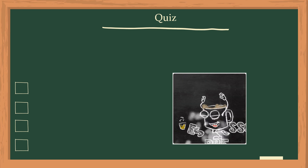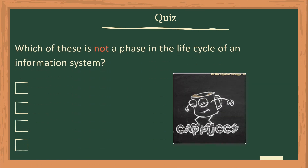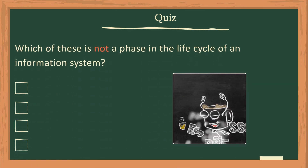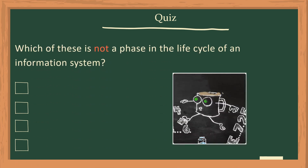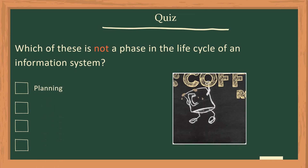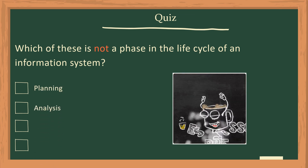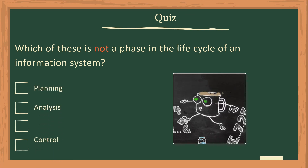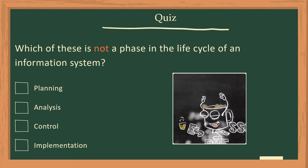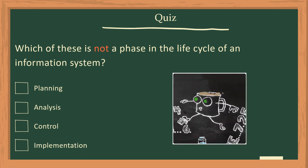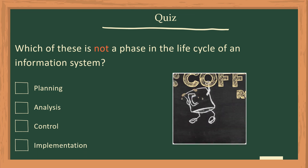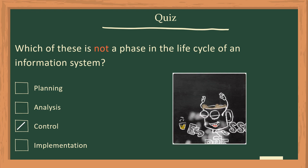Now we will recap what you have learned from this video. Which of these is not a phase in the life cycle of an information system? A: Planning, B: Analysis, C: Control, D: Implementation. The answer is C: Control.